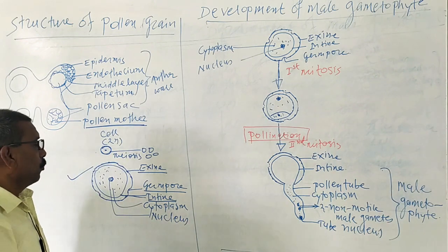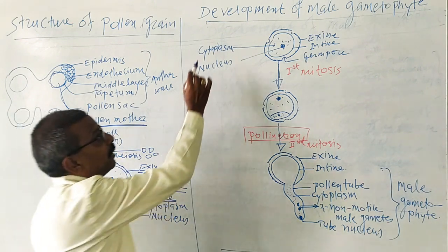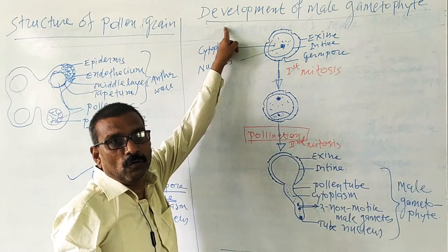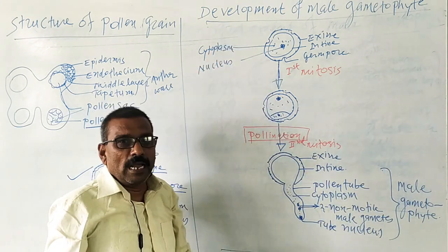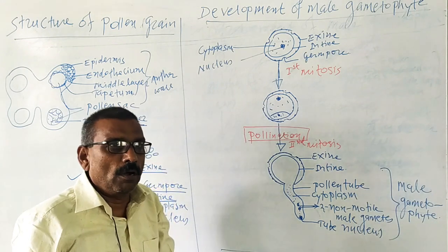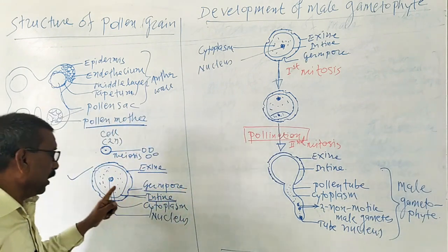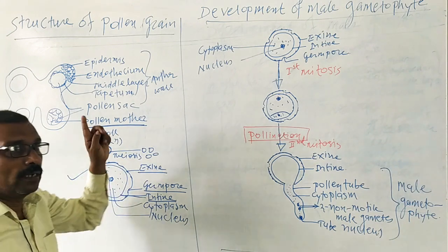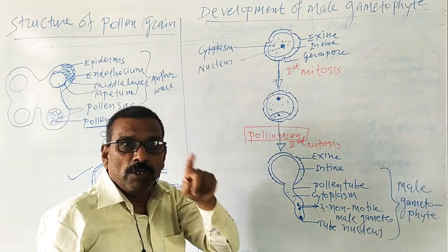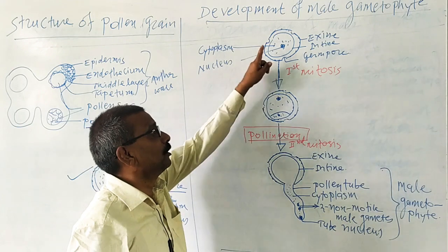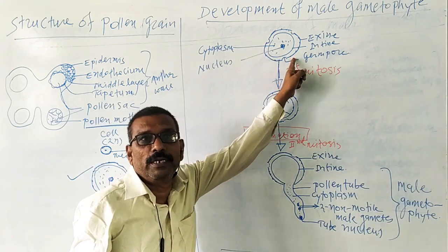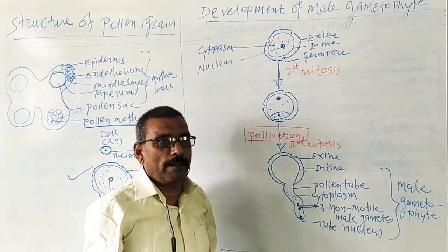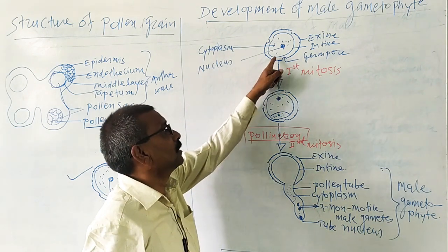Now we are going to study the development of the male gametophyte. The male gametophyte develops from the pollen grain. Each pollen grain is structurally unicellular, uninucleated, and haploid, generally circular in structure.